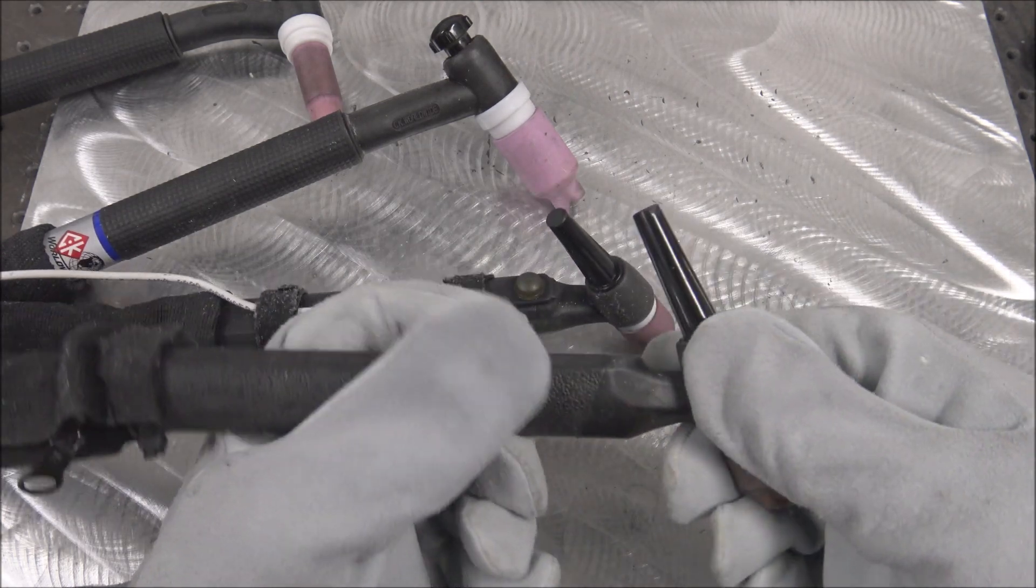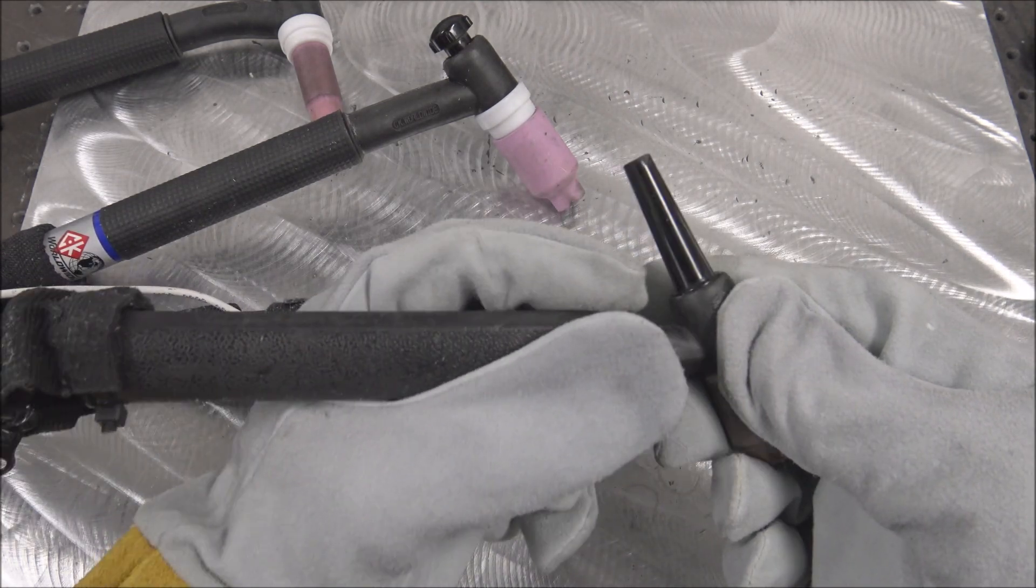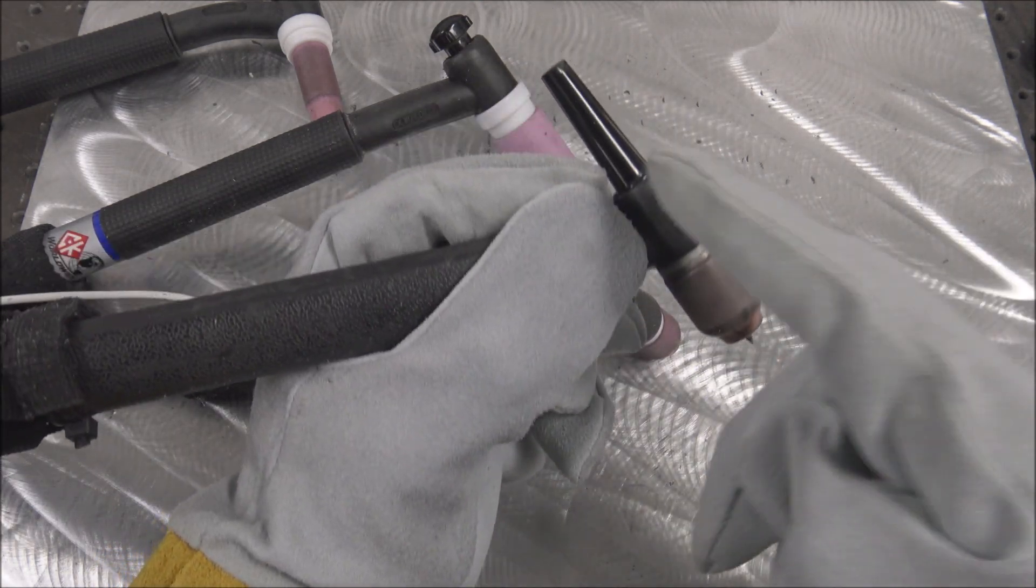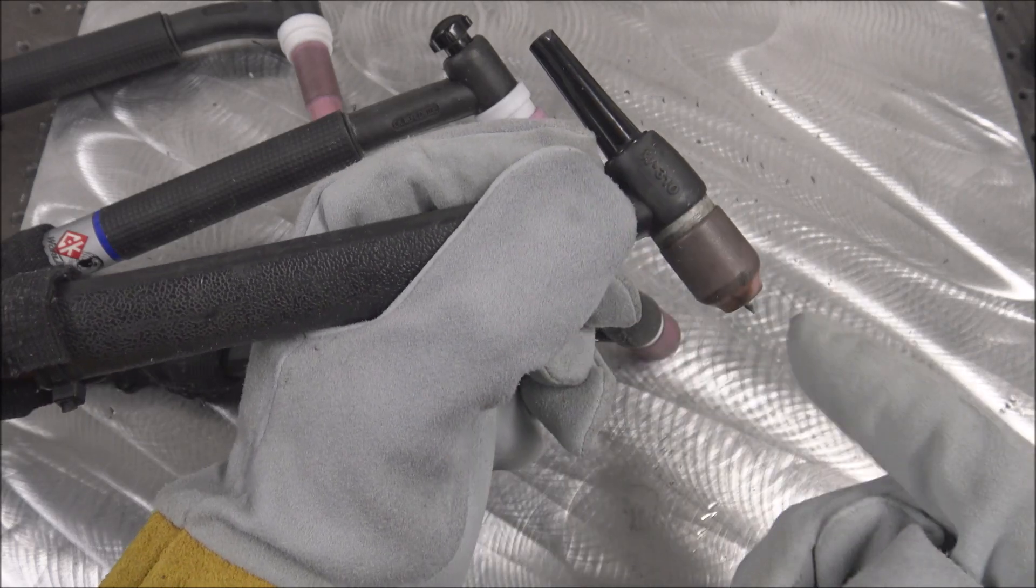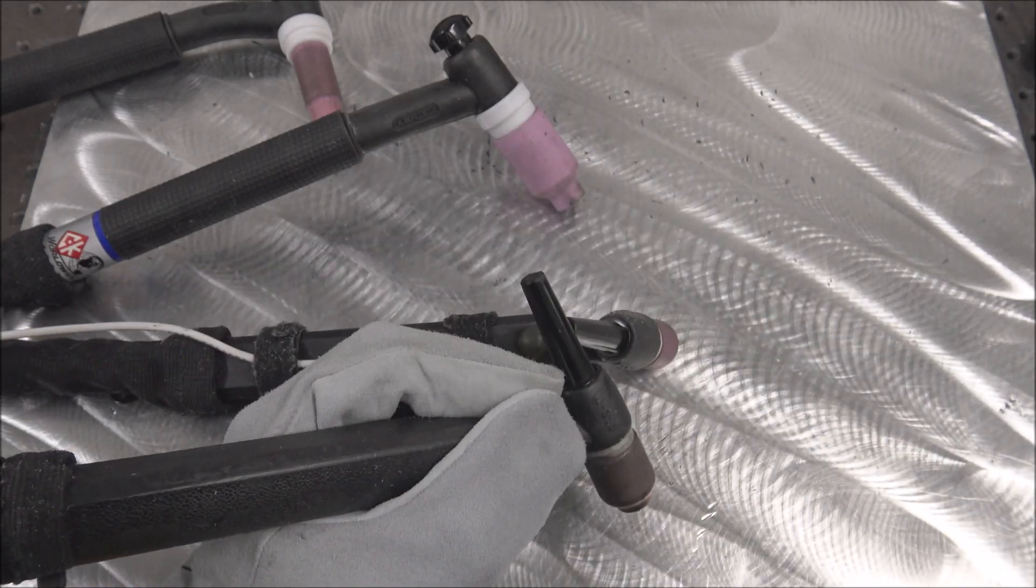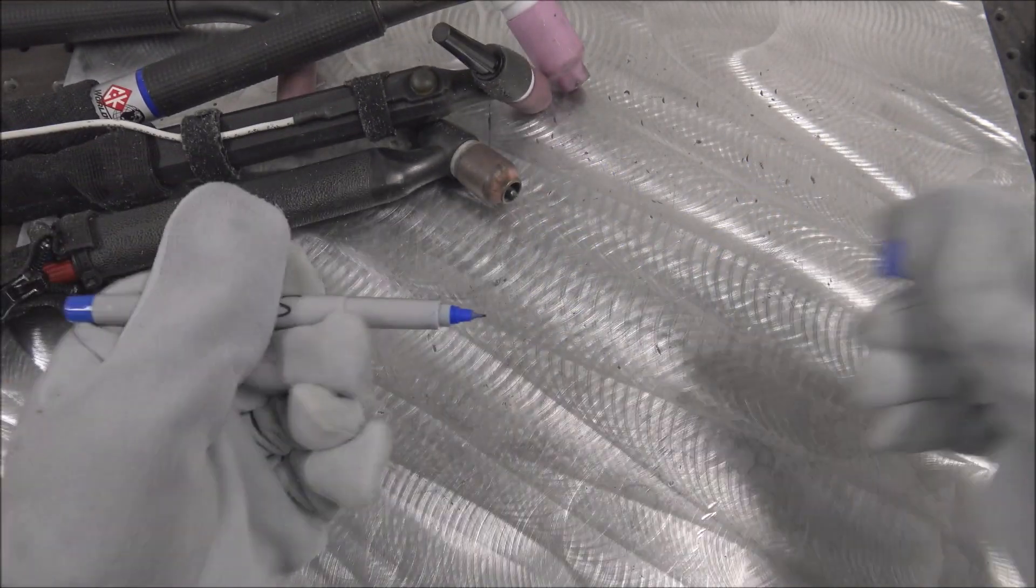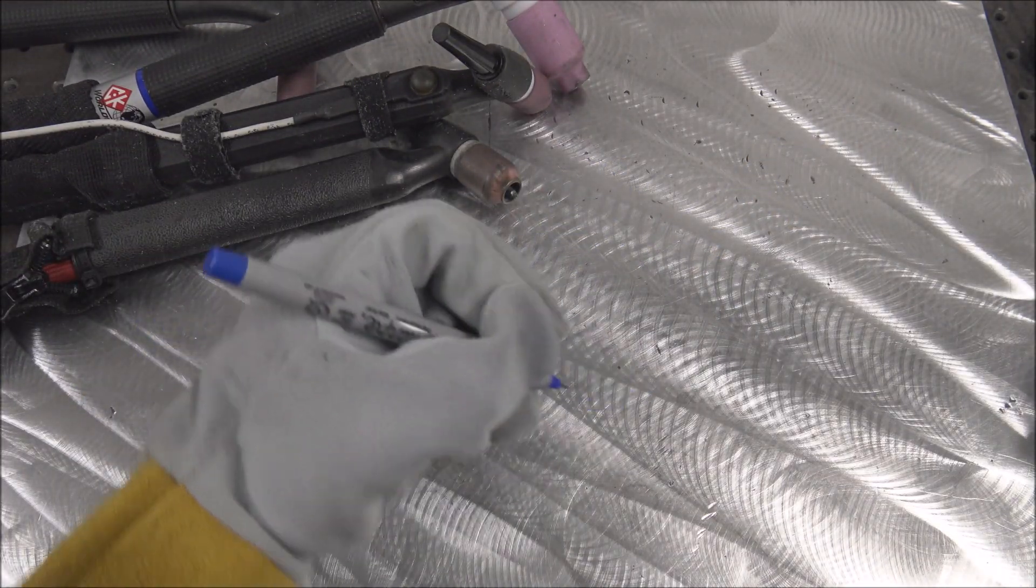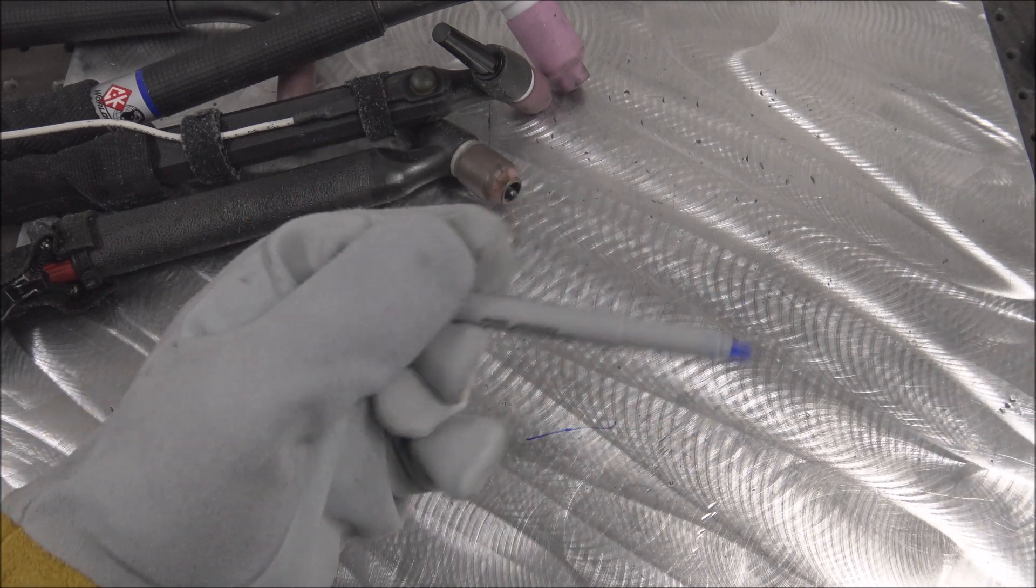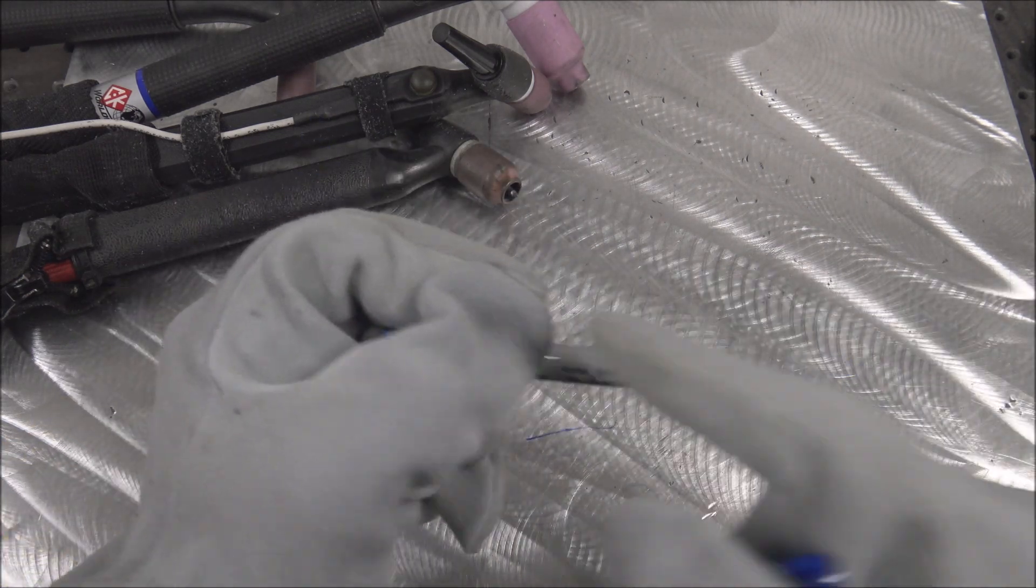The reason I like this torch so much is because of how far you can comfortably choke up on it. The closer you are here to the tip of your tungsten, the more accurate you can weld. It's the exact same as a pencil - if you want to be really accurate with a pencil or pen, you hold it up nice and close.